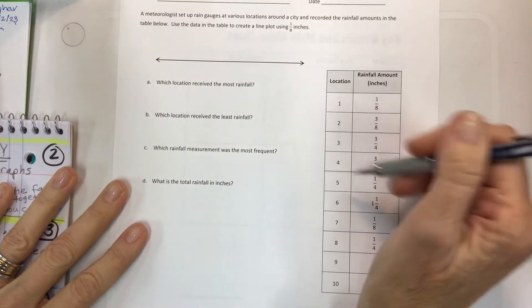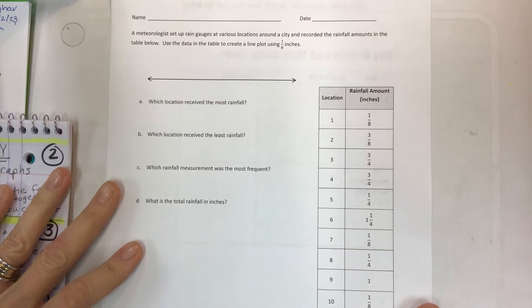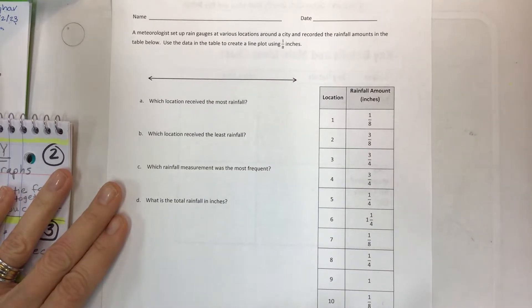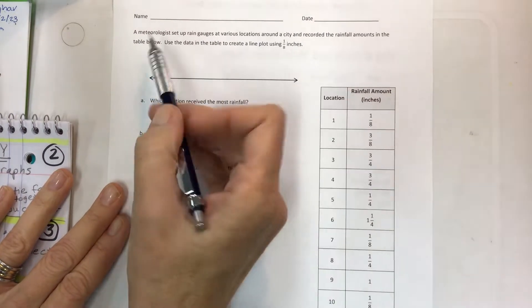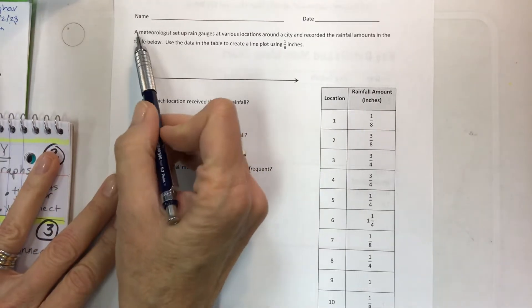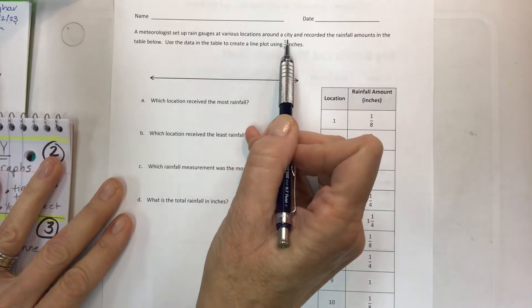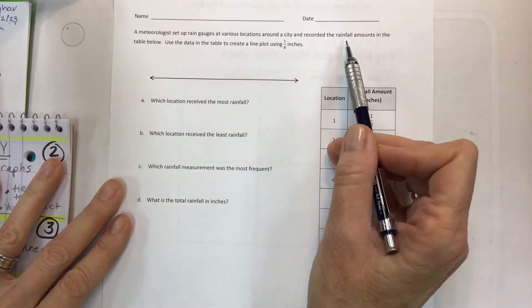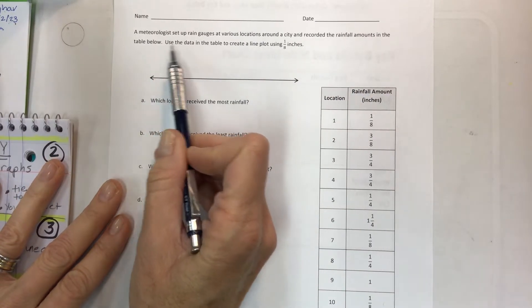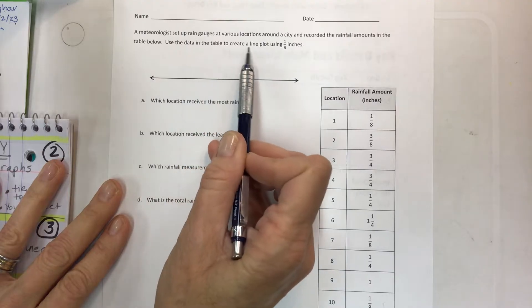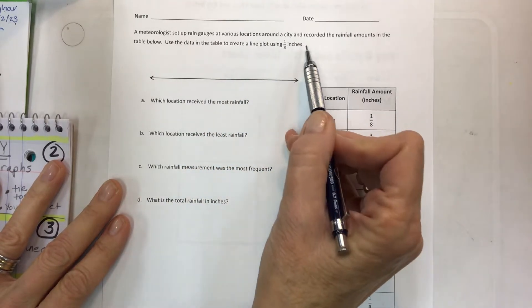Here on the homework it's actually really easy and fun and fast. Let me just read this and then we'll talk about it briefly. A meteorologist set up rain gauges at various locations around the city and recorded the rainfall amounts in the table below.